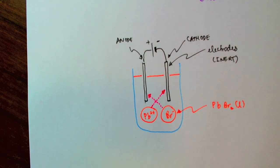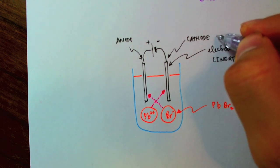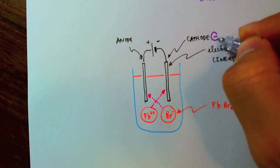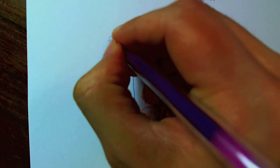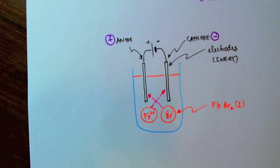And when these ions reach the electrodes, a chemical reaction takes place at the electrodes. At the cathode, which I'll denote with a minus and the anode, I'll call the plus.